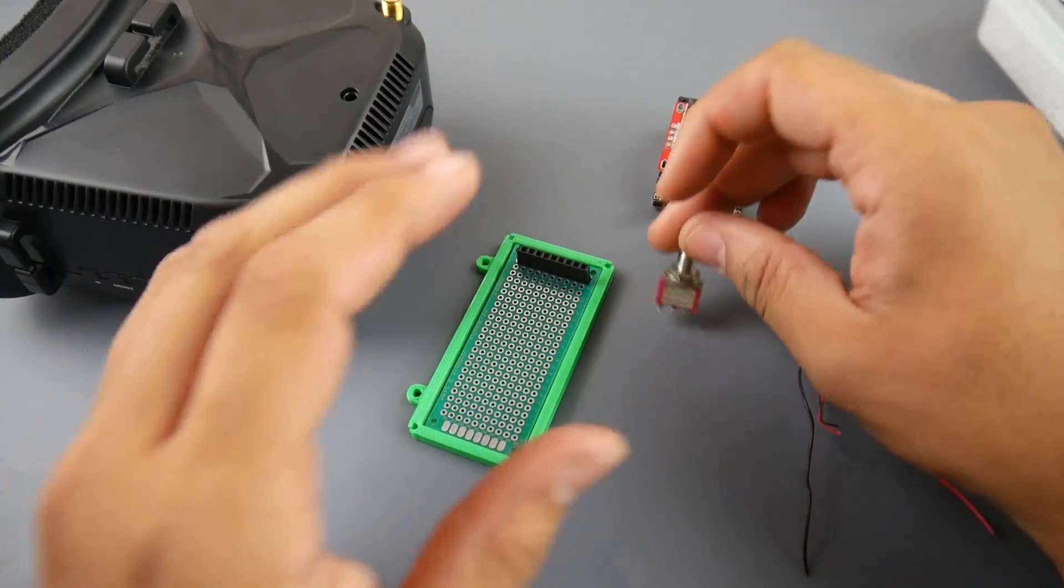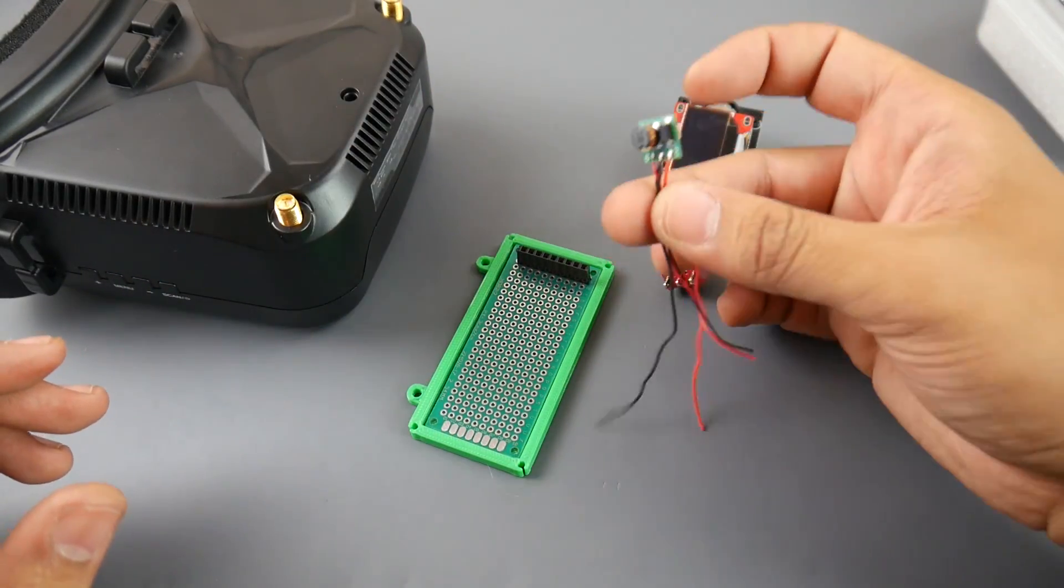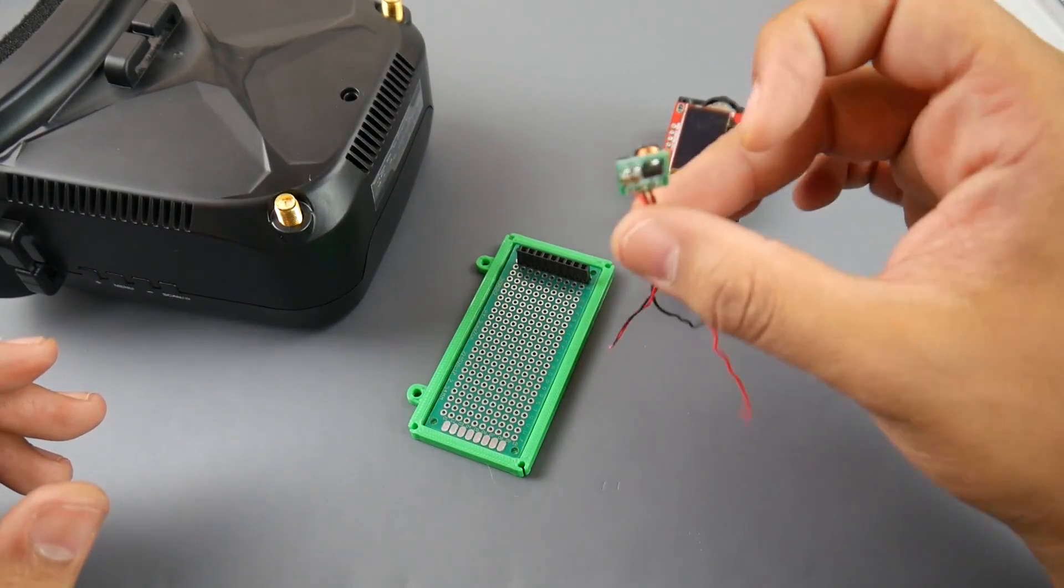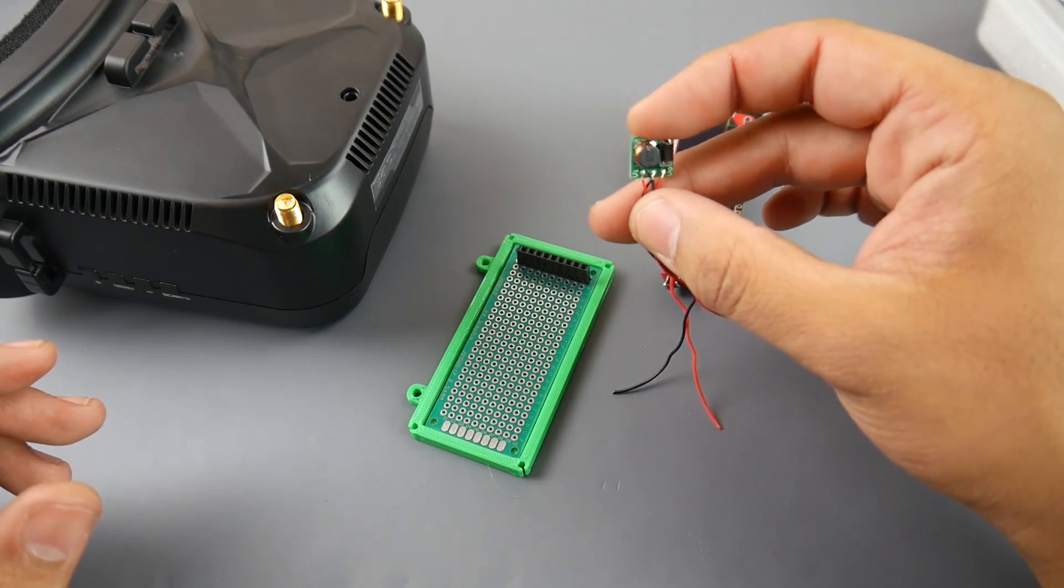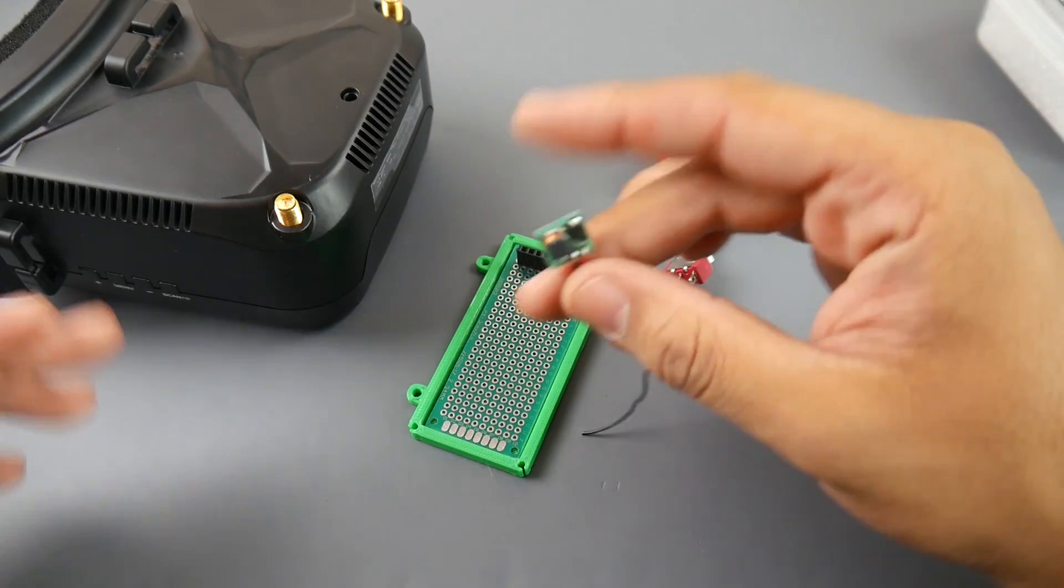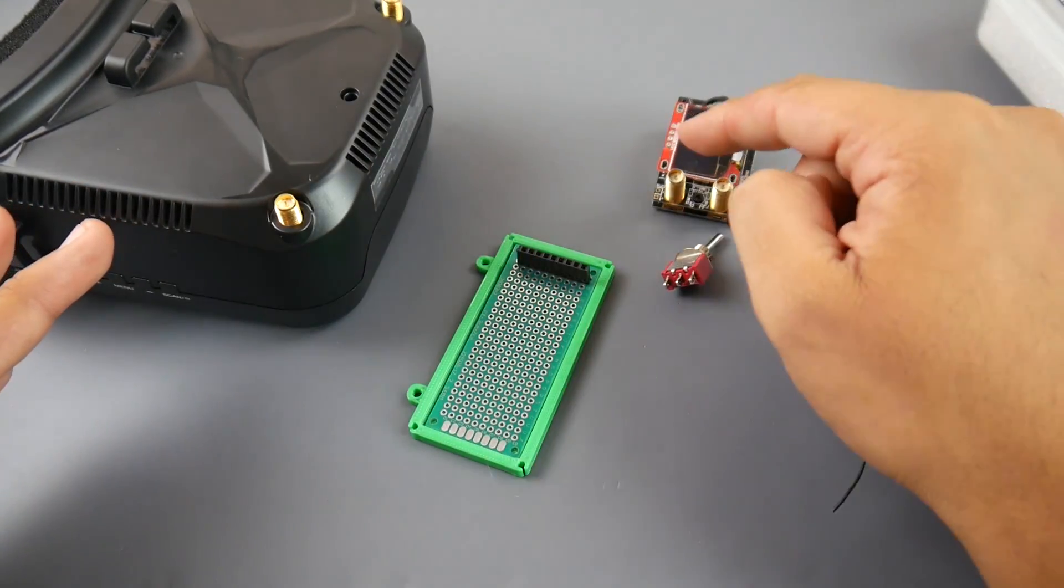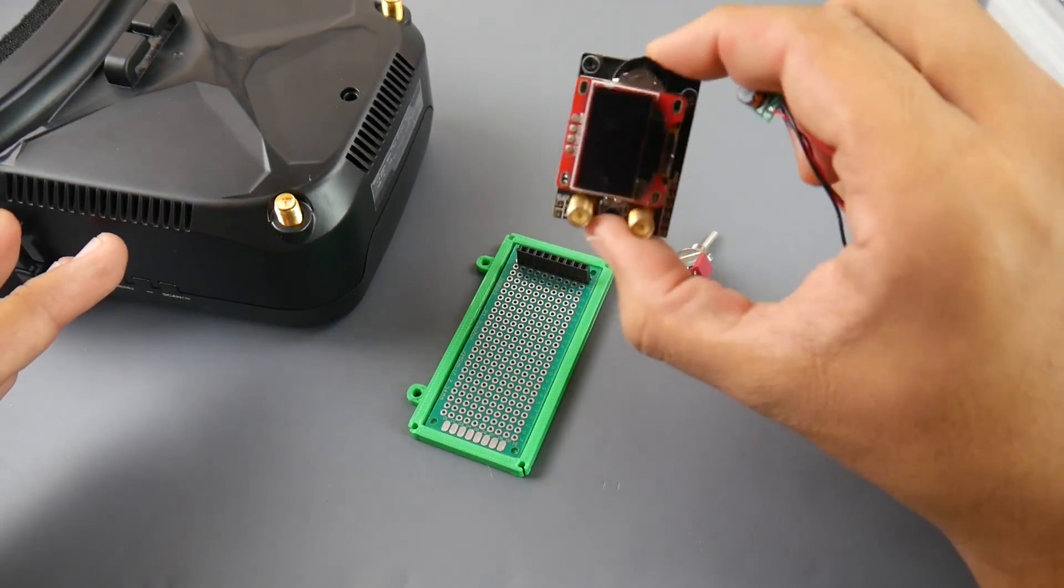We're also going to need a switch so we can switch the module on and off, which is going to be this guy. I'll leave a link to everything down below. Go ahead and check those out. Make sure you get the same exact one because these come in different things and they all look alike. Some are for 3 volts, and this is a step-up converter. This will step up the 3.7 volts to 5 volts so it can boot up the Fatshark module here.